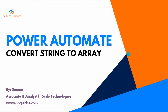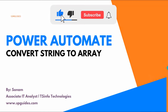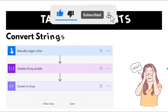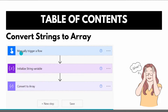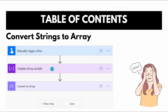Hello friends, this is Sonam. Today in this Power Automate tutorial we will discuss how to convert a string to array format. We will assign a string variable and then convert it to array format. This is a preview of the entire flow that I have created, where I have added a trigger and then some actions to convert the string variable to array.